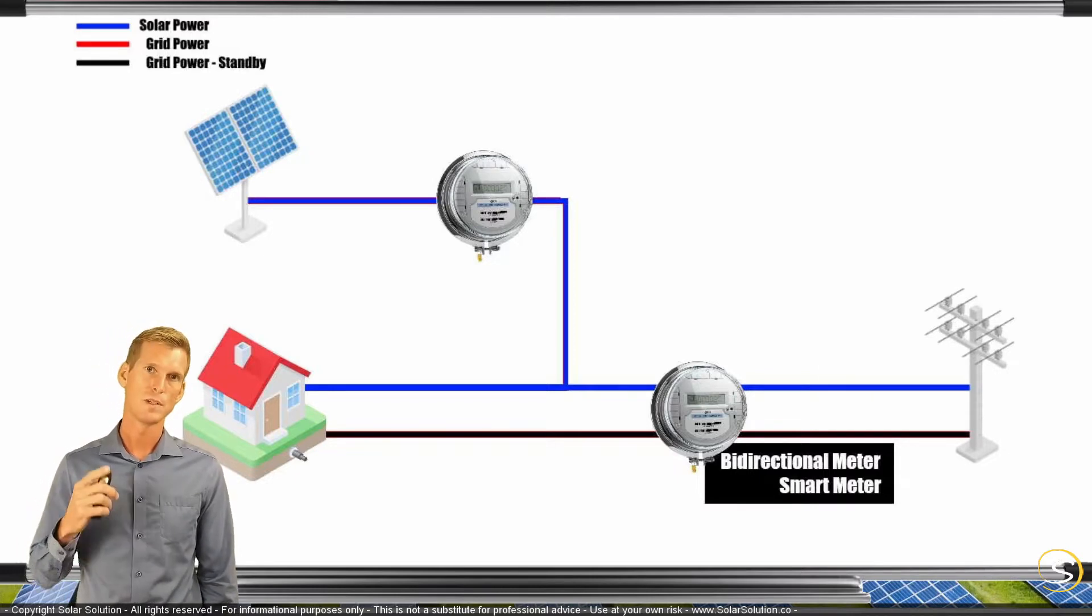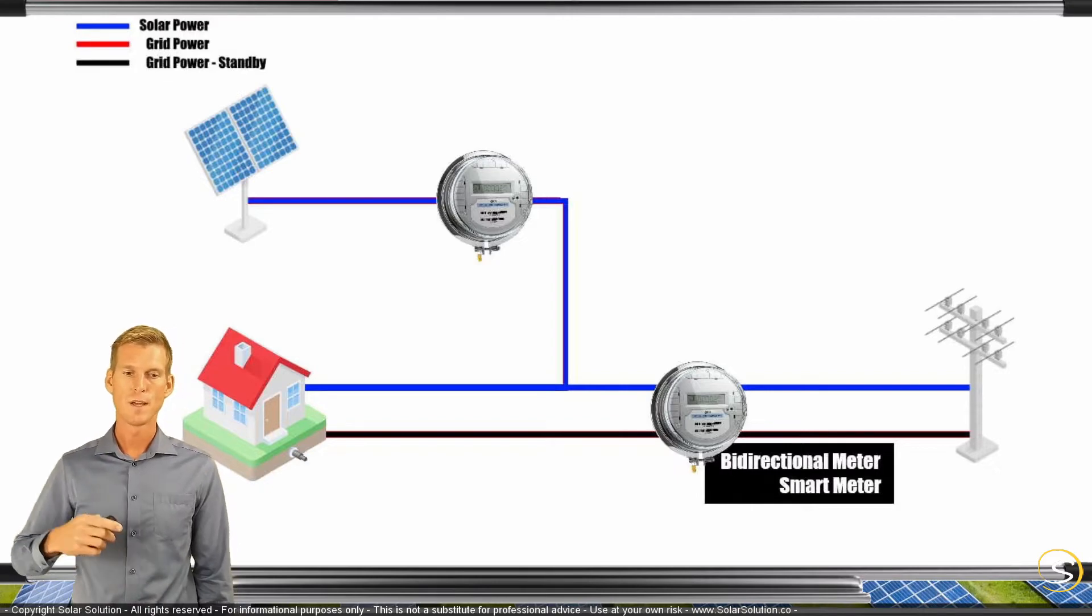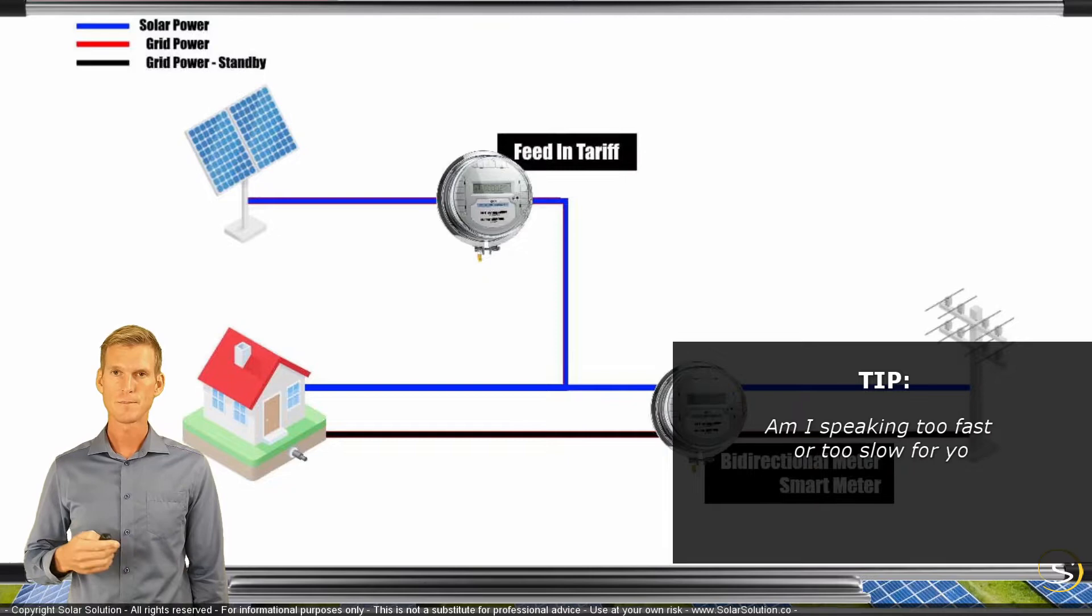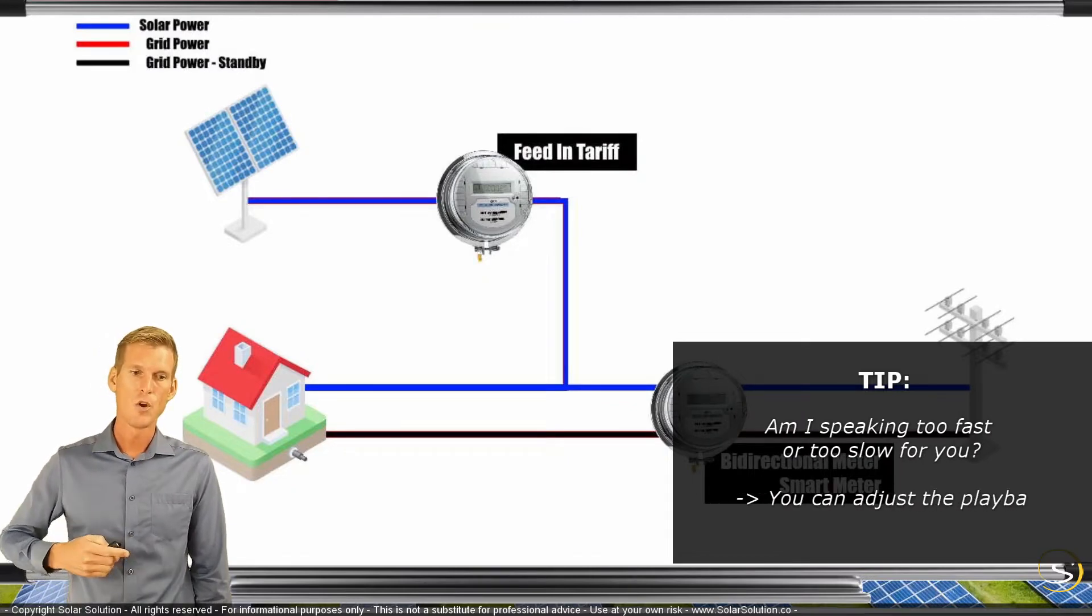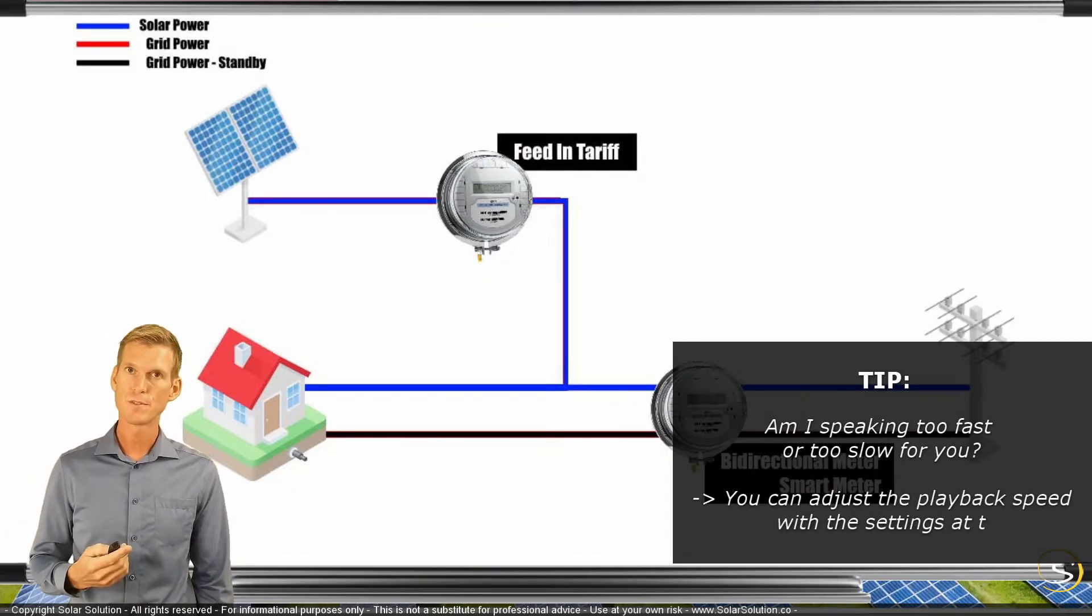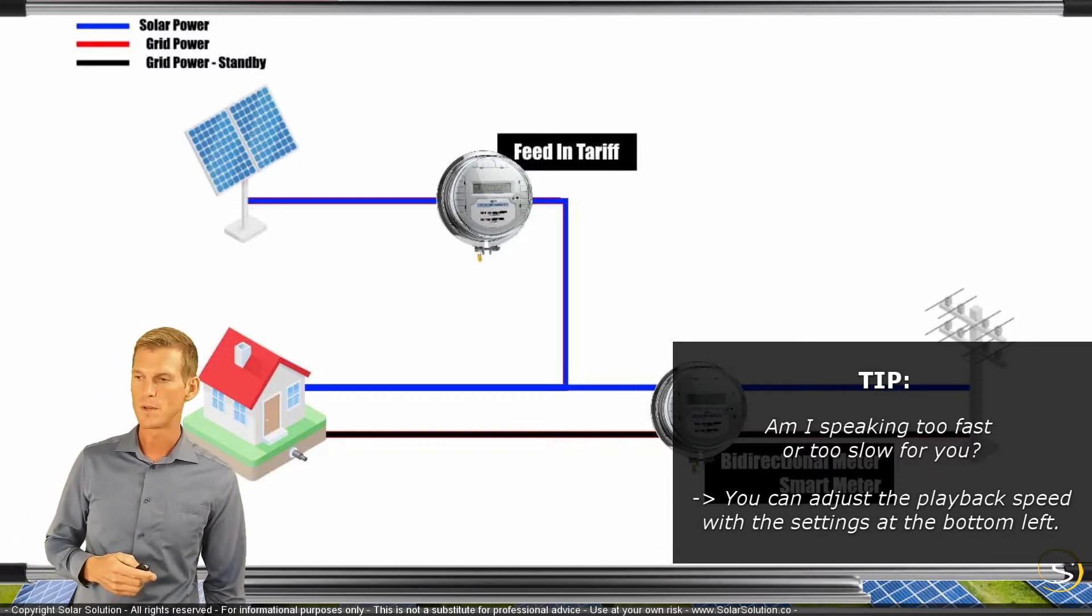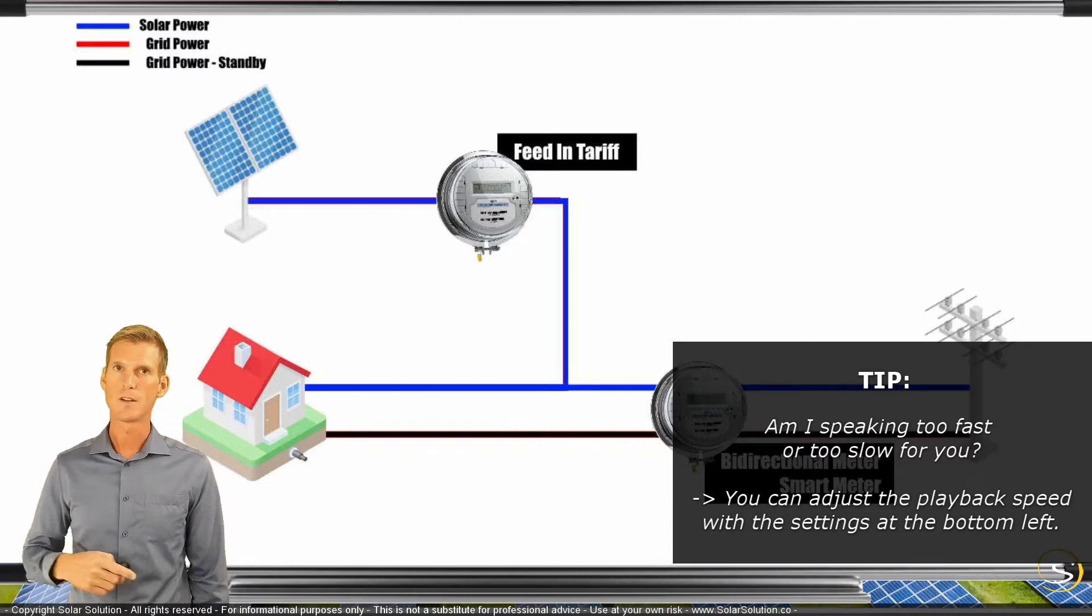There's a second meter that is between the solar panel and yourself. This kind of structure will be used for a feed-in tariff structure, whereby they can measure exactly what you have produced, for which you receive certain compensation, and they also measure how much you're feeding into the grid or taking out of the grid.